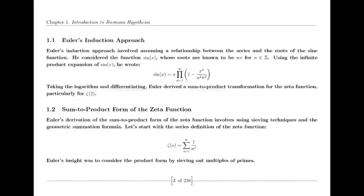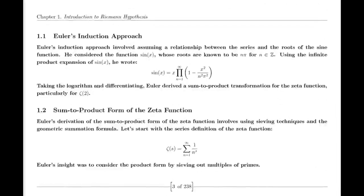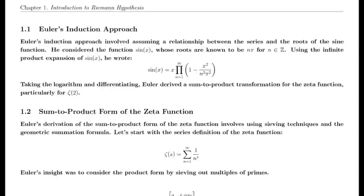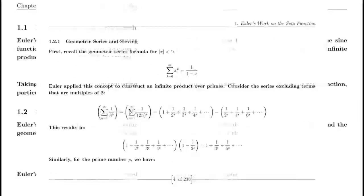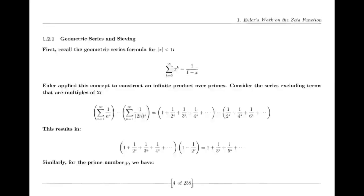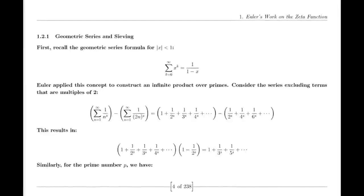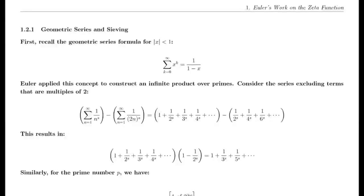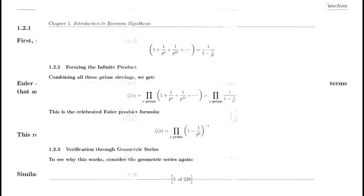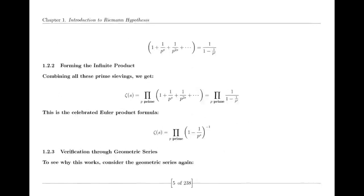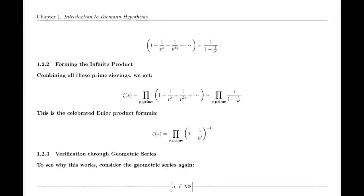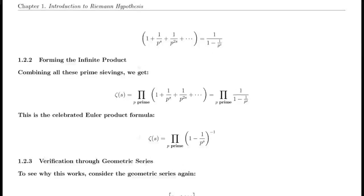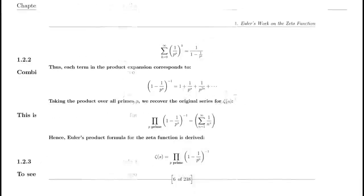Jacobi Theta Function. Riemann also made use of the Jacobi theta function, which has significant applications in various areas of mathematics. The theta function's series representation and modular properties were instrumental in Riemann's derivation of the functional equation for the zeta function. This equation is crucial for understanding the zeta function's behavior across the complex plane and highlights its intricate connections to other mathematical functions.